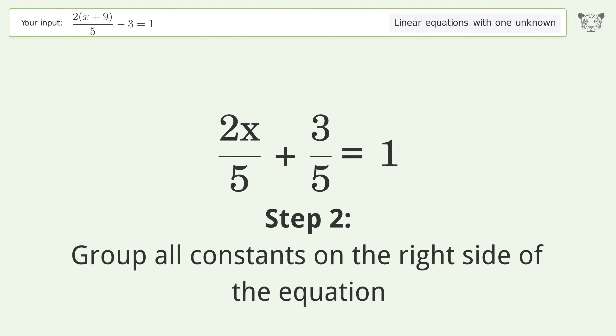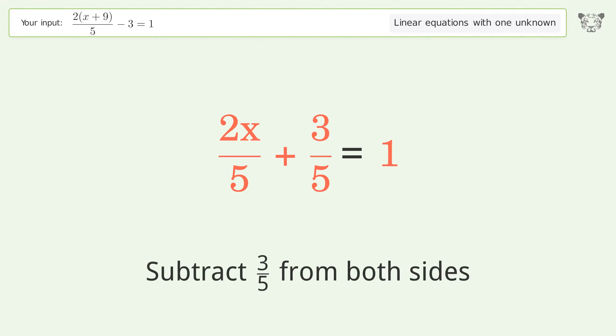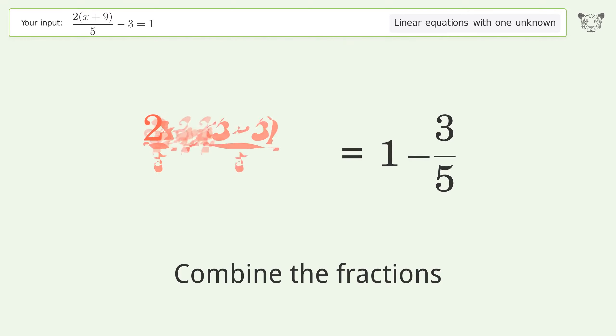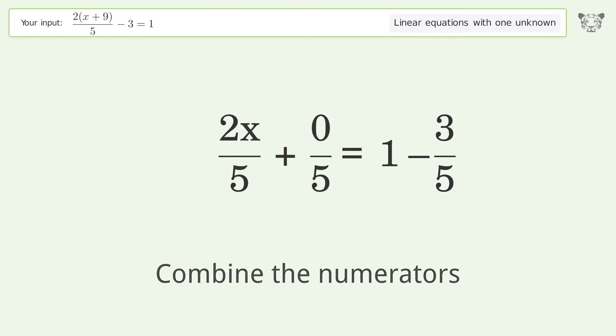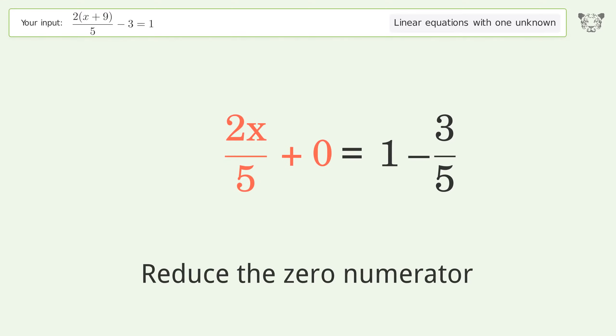Group all constants on the right side of the equation. Subtract 3 over 5 from both sides. Combine the fractions. Combine the numerators. Reduce the zero numerator. Simplify the arithmetic.